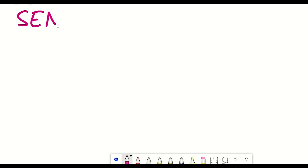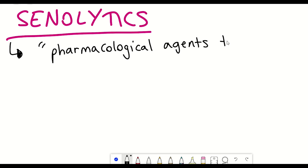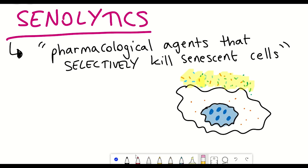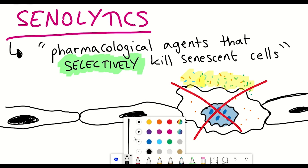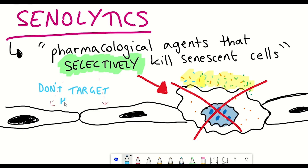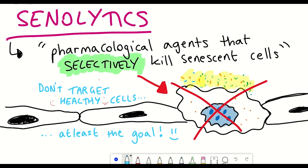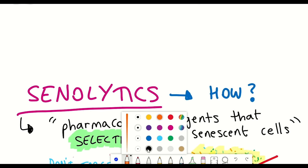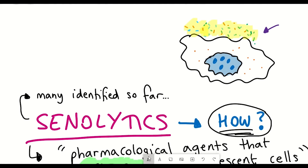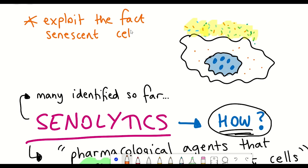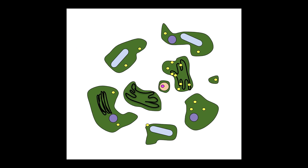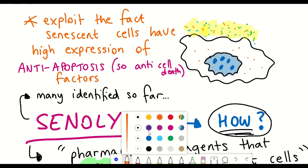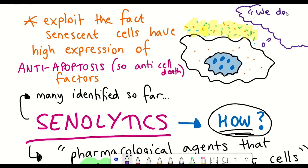Senolytics describe pharmacological agents that can selectively eliminate senescent cells. The key word here is 'selective' — the idea is that they kill senescent cells and not your normal healthy cells. Various senolytic strategies have been developed using a combination of in vitro models of senescence and in vivo animal models. The different compounds identified seem to exploit the fact that senescent cells frequently upregulate genes that repress apoptosis — a process of programmed cell death. Senescent cells are very anti-cell death; they just persist, secreting stuff.